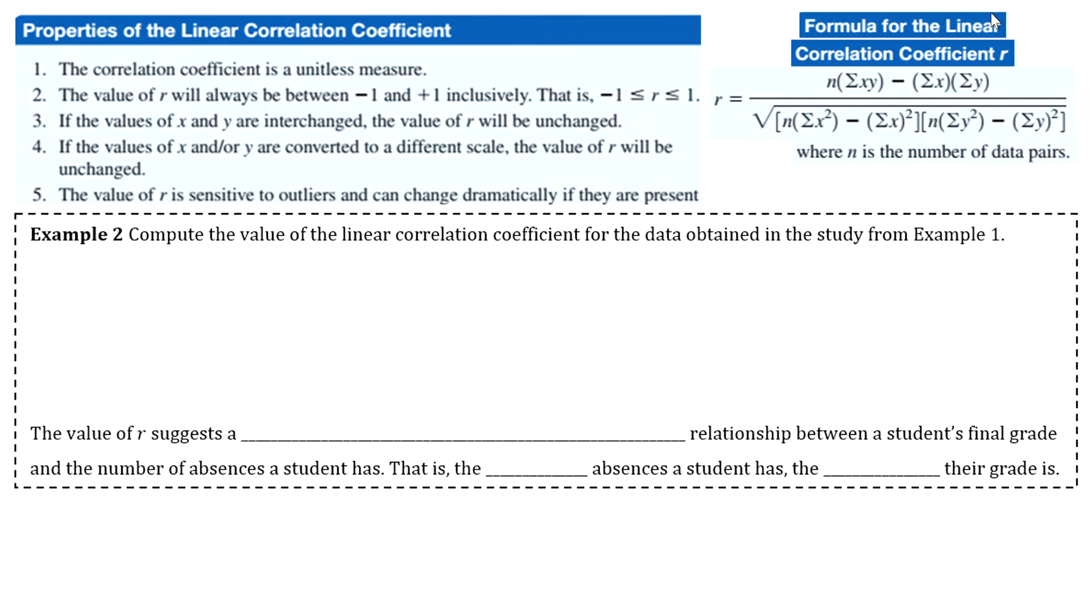So some properties of the linear correlation coefficient. It's a unitless measure, so we'll never put units on it. The value of R will always be between negative 1 and positive 1. Kind of a cool fact that if you interchange the values of X and Y, the correlation coefficient will stay the same. Same thing if you change the scale of X and Y, R will still stay the same. And then it's good to point out that R is sensitive to outliers. So just know that if you are computing this with real data and you have an outlier, you might have to make a judgment call about whether you want to remove that outlier from the data set before you calculate your correlation coefficient.